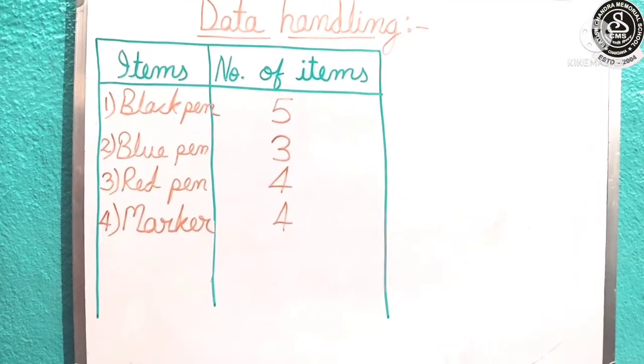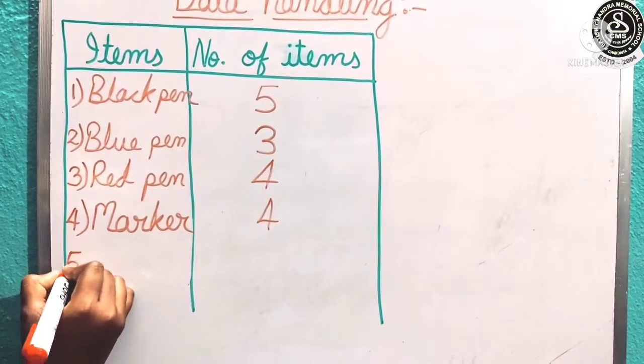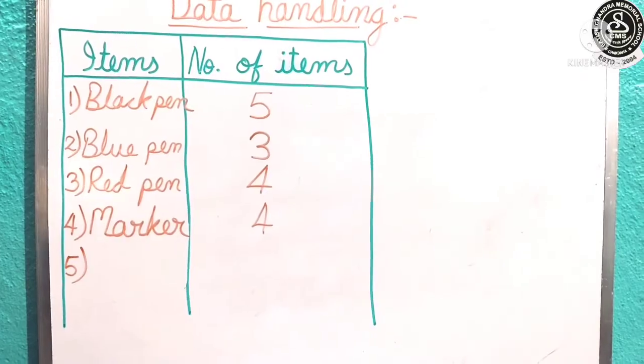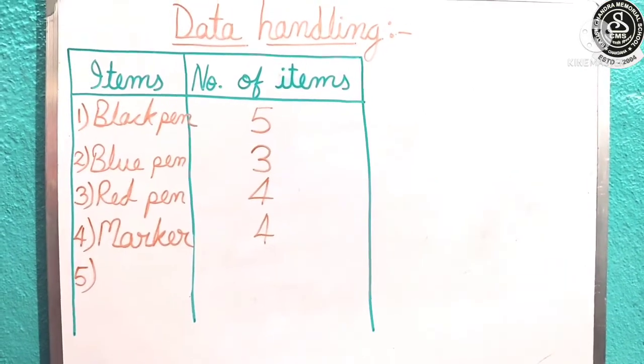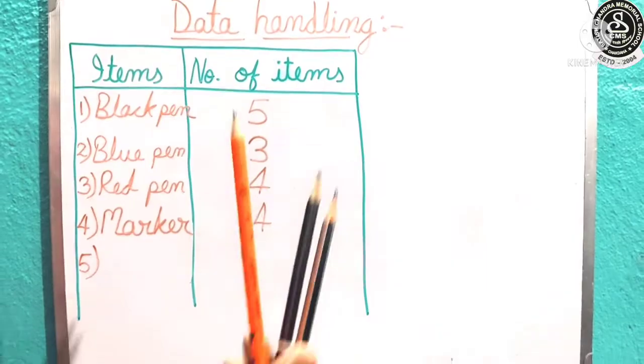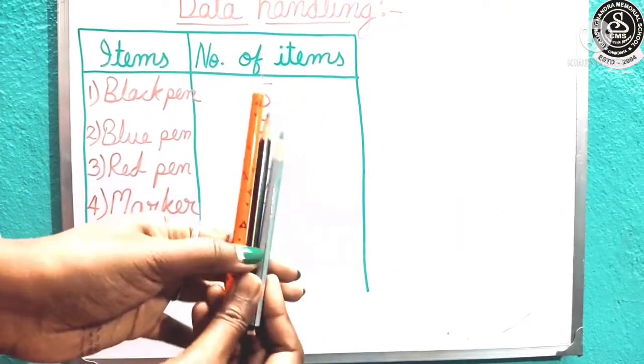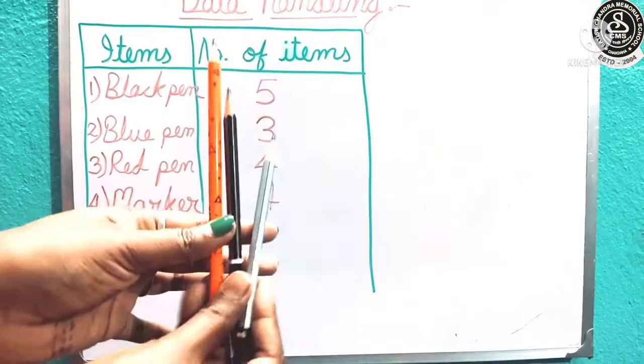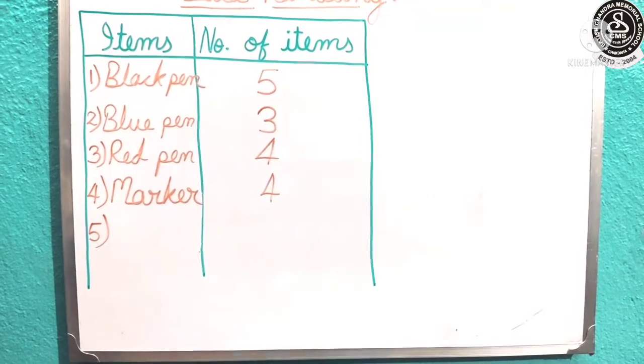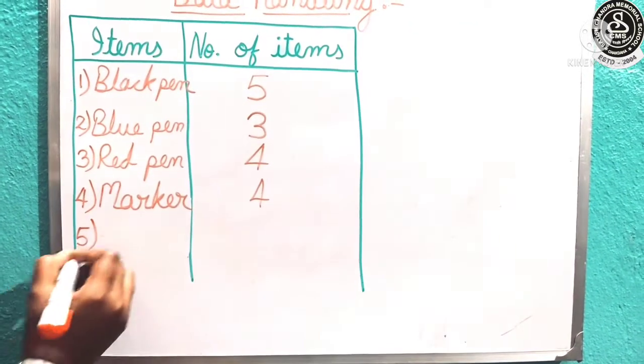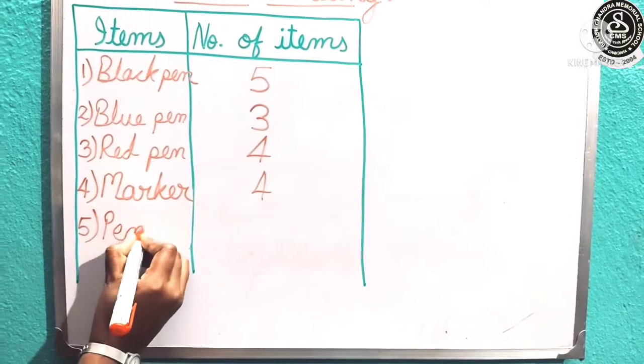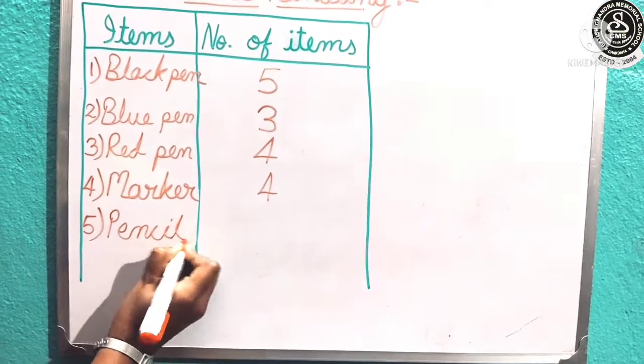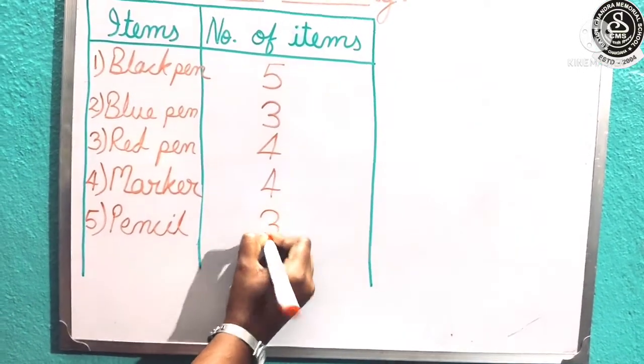Now the next number 5 item. Number 5 item is pencil. Yes children, you have pencil, I have also my pencil. Let us count: 1, 2, 3. So total 3 pencil I have. I am going to write here pencil, and the number of pencil is 3.